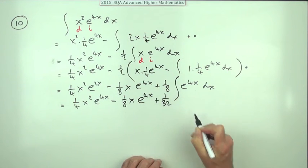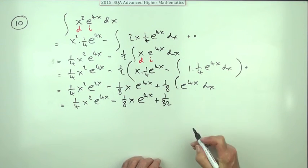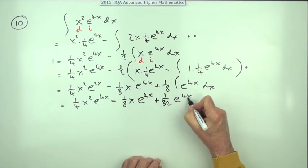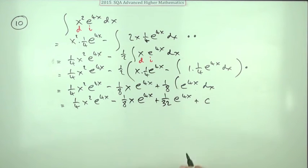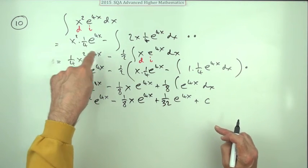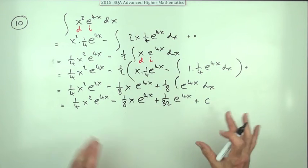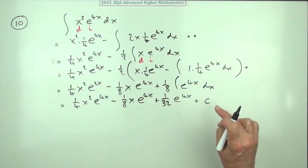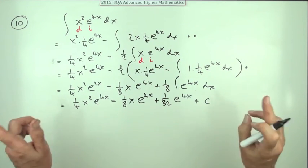And that again will be e to the 4x divided by 4. So that'll be 1 upon 32 e to the 4x. And strictly speaking I should put plus c. Since I can finally introduce the constant that was kind of popping out of the various integrations. But now it's been fully integrated. Plus c. Still not the fourth mark though.